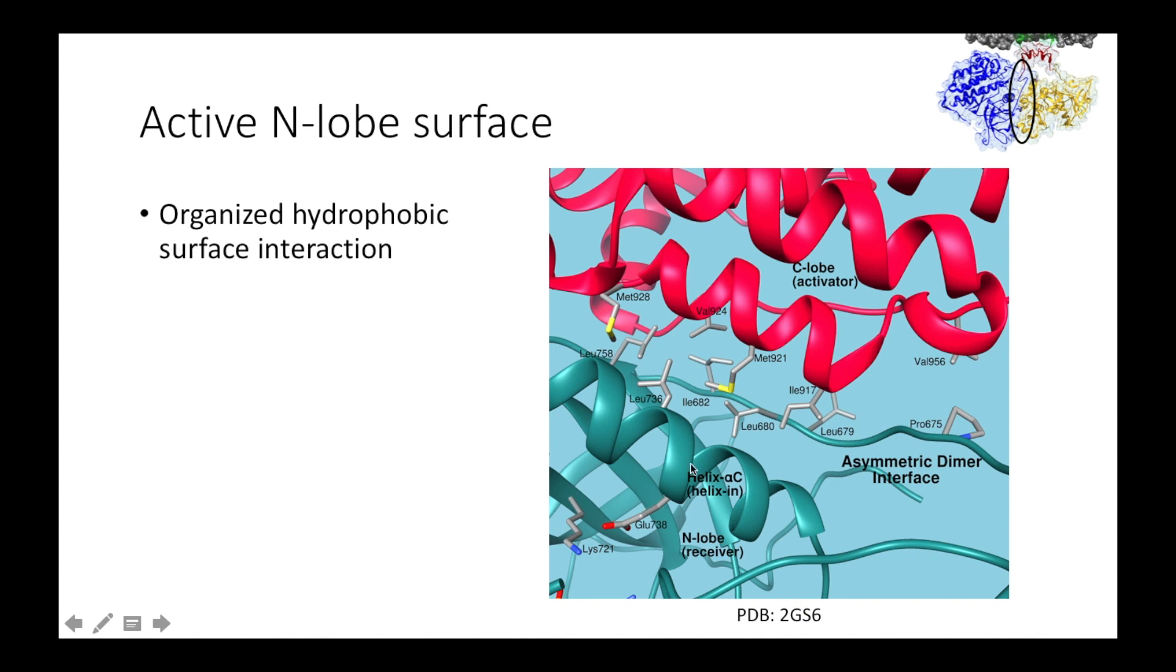There's an interesting series of experiments that illustrate the importance of this hydrophobic surface interaction. Researchers created two mutant populations of EGFRs. In one population, they mutated the hydrophobic residues of the C-lobe surface so that they couldn't act as activators. And in the other, they mutated the hydrophobic residues of the N-lobe interface so they couldn't be activated. On their own, both populations of mutant receptors were incapable of kinase activity. However, when both populations were mixed together, normal kinase activity was restored, proving that the kinase domain could act either as an activator or a receiver, and that this activity was dependent upon the asymmetric hydrophobic surface interaction between dimerized kinases.